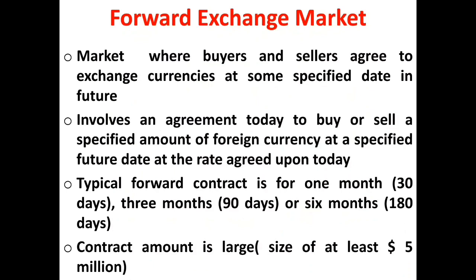The contract amounts in the forward market are essentially larger, with the size being at least $5 million. In the forward market, when the contract is signed, a seller agrees to sell a predetermined amount of foreign exchange to be delivered at some future date at a price agreed upon today — that price or rate is known as the forward rate. Analogously, a buyer agrees to buy a certain amount of foreign exchange at a future date at a predetermined price or exchange rate.